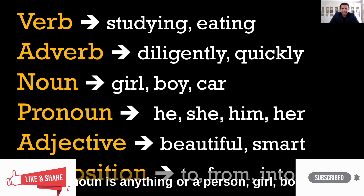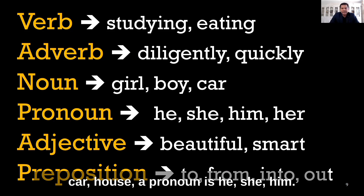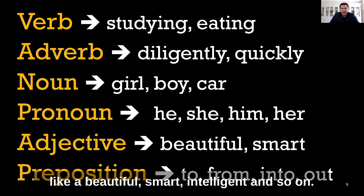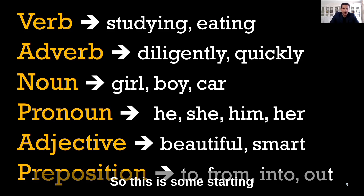A noun is a person, place, or thing — for example, girl, boy, car, house. A pronoun is he, she, him, her. An adjective is something that describes a noun, like beautiful, smart, or intelligent. And prepositions are words like to, from, into, out, and so on. These are the starting parts of speech to begin with.